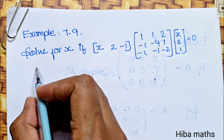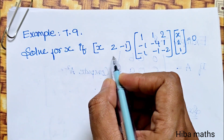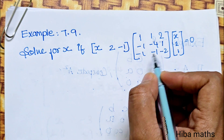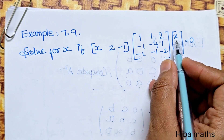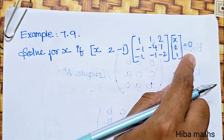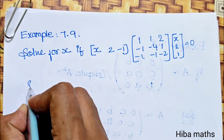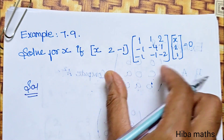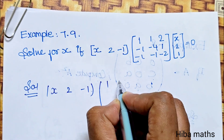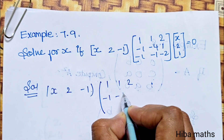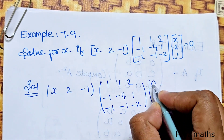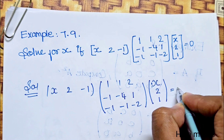Example 7.9: Solve for x, if x² minus 1, [1, 1, 1; 2, minus 1, minus 4; 1, minus 1, minus 1] minus 2, x², 1, equal to 0. In the matrix, we multiply by 0. We multiply by x² minus 1, [1, 1, 2; minus 1, minus 4, 1; minus 1, minus 2], and x², 1, is equal to 0.